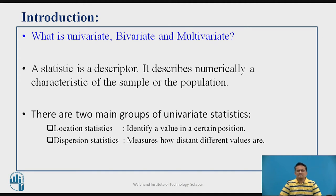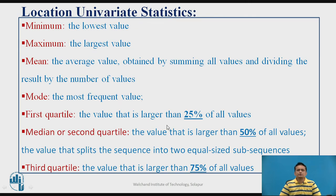Analysis of the data can be done in three different ways: you can have frequency calculations, then visualization, and then you can have statistical parameters defined. Univariate analysis is basically divided into two kinds: location statistic analysis and dispersion statistic analysis. We will concentrate on location statistics, where the statistic values depend on the position of the data.